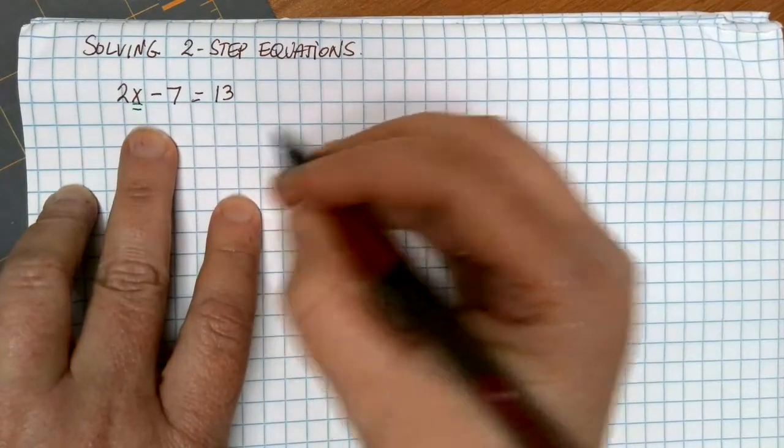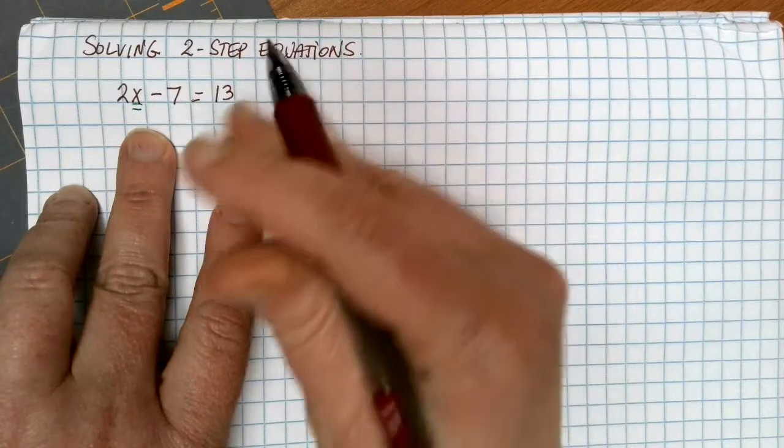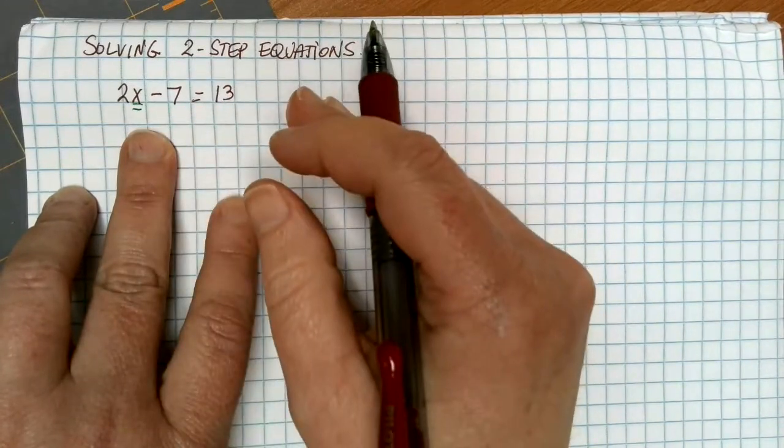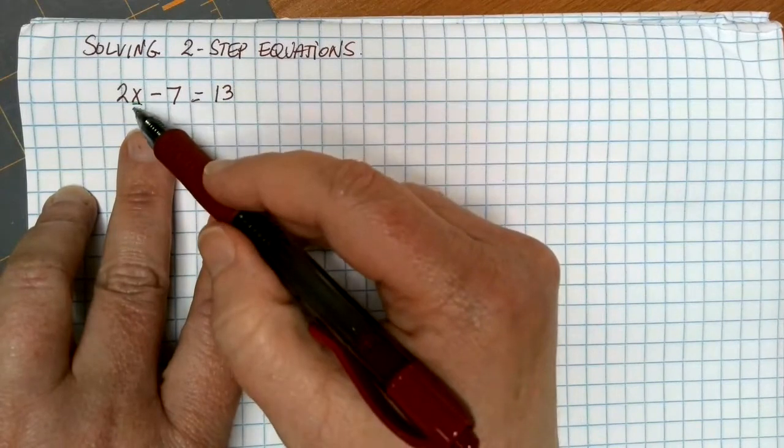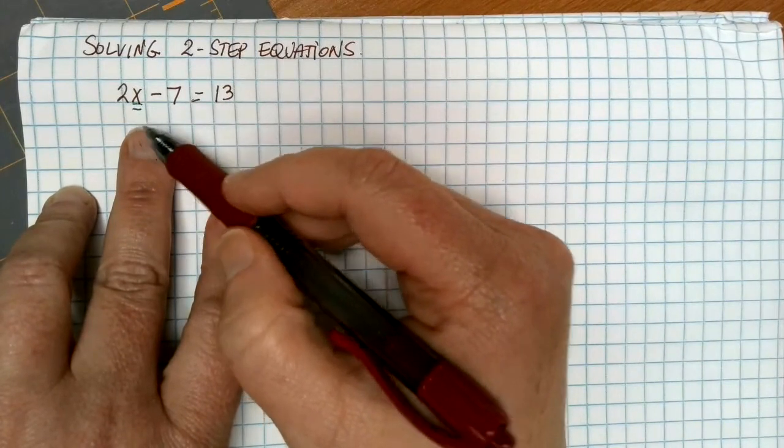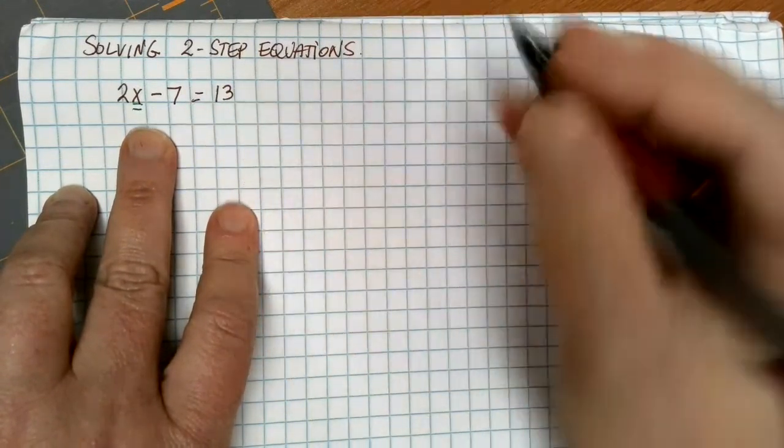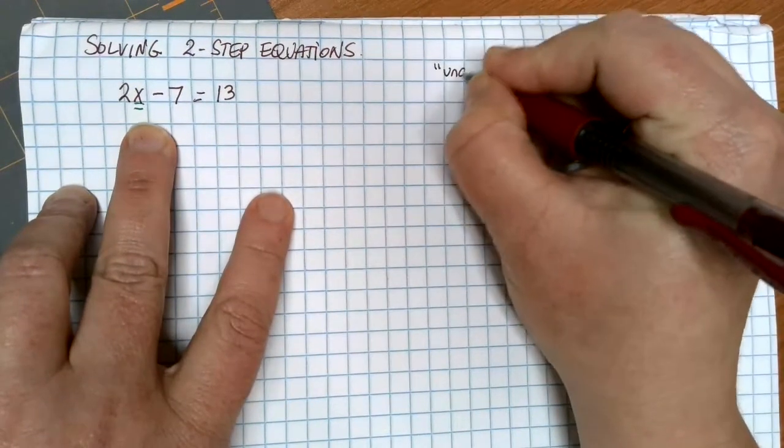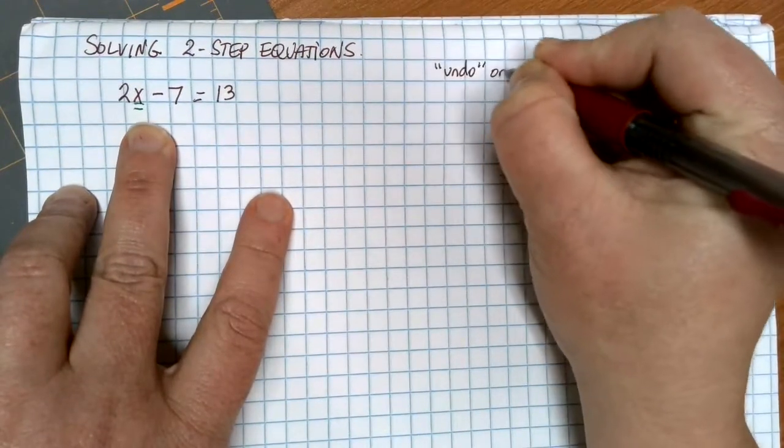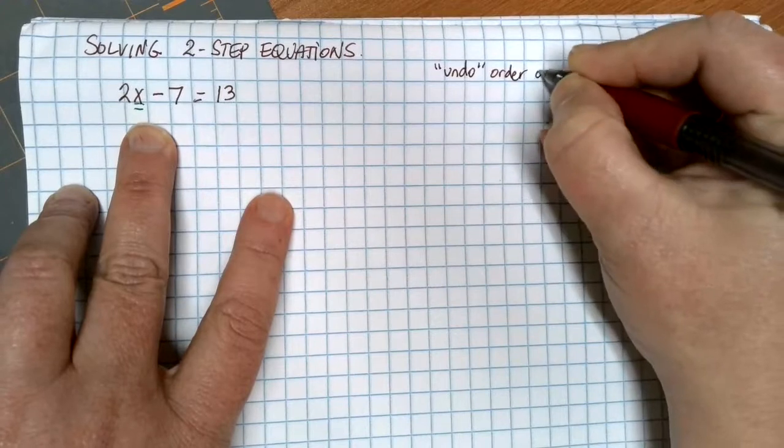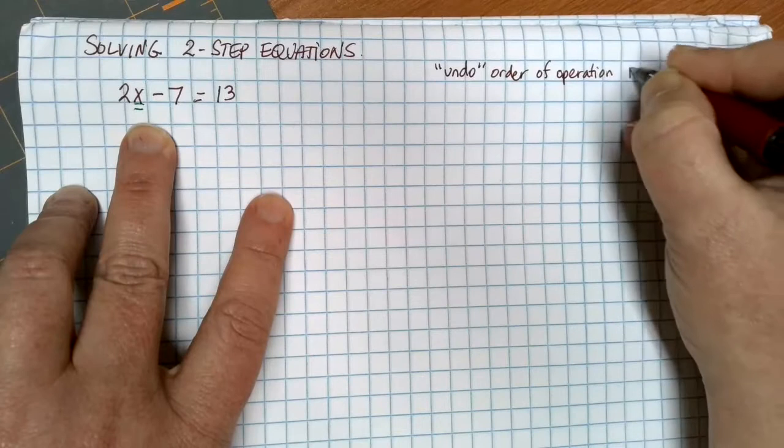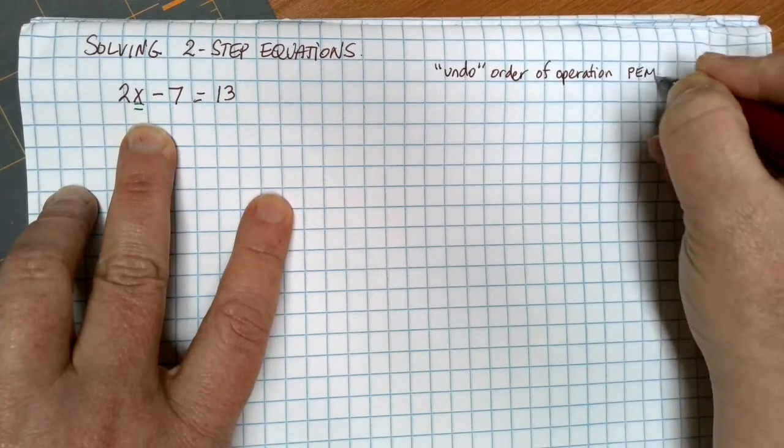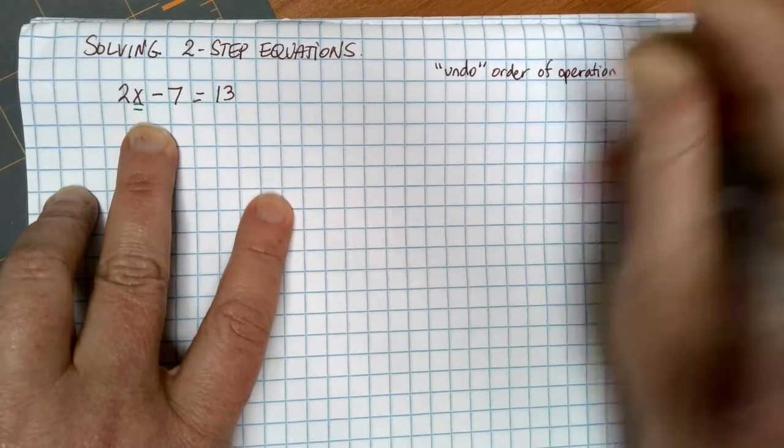When we're solving equations, we're undoing things. We talked about when there's multiplying, we undo it with division. When there's adding, we undo it with subtraction. When we are trying to get something alone, we are undoing the order of operations. Think about what our order of operations is. We usually use the PEMDAS as our little reminder. Parentheses, exponents, multiplication and division, addition and subtraction.